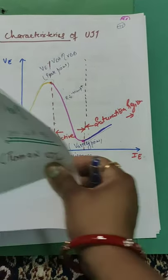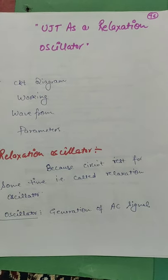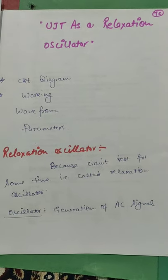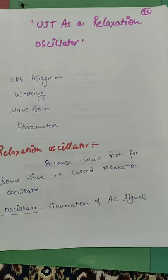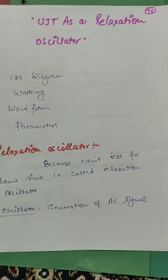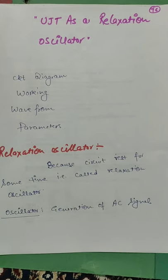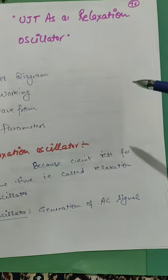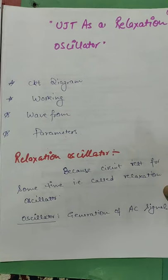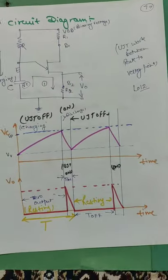UJT is generally used as a relaxation oscillator. Why is it called a relaxation oscillator? An oscillator is a generator of AC signal. It is called a relaxation oscillator because the circuit rests for some time while working as an oscillator — it goes into a relaxing mode. So this is called a relaxation oscillator.